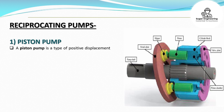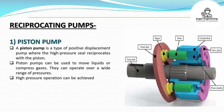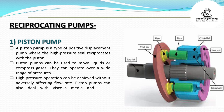Reciprocating Pumps. 1. Piston Pump: A piston pump is a type of positive displacement pump where the high-pressure seal reciprocates with the piston. Piston pumps can be used to move liquids or compress gases. They can operate over a wide range of pressures. High-pressure operation can be achieved without adversely affecting flow rate. Piston pumps can also deal with viscous media and media containing solid particles.